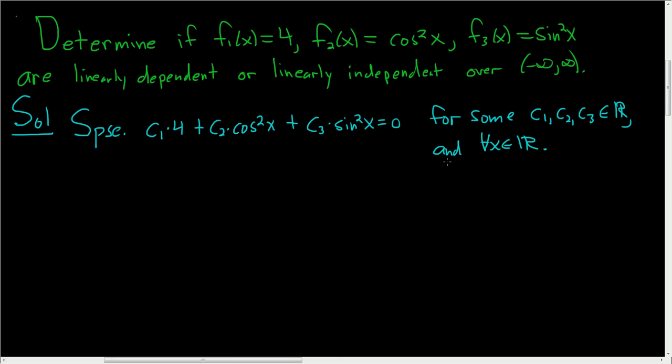And so one of two things is going to happen. If all of the ci's are 0, so if they're forced to be 0, then the answer is independent. And if they're not all 0, then the answer is dependent. So if this condition is forced, then it's independent. But if we can find some ci's that aren't 0, then the answer is dependent.